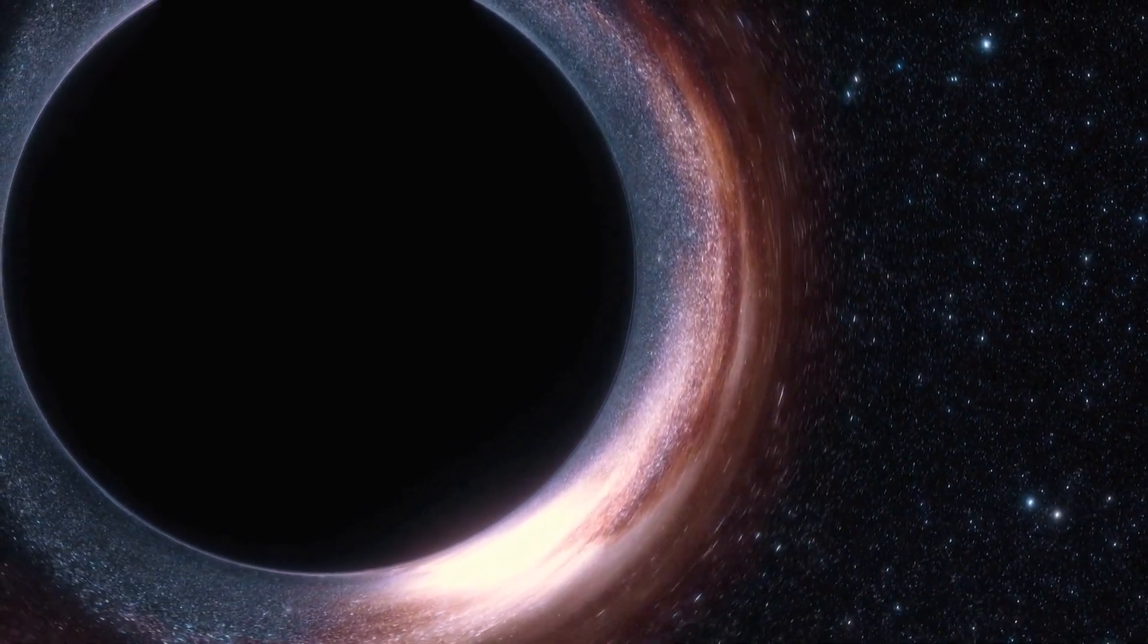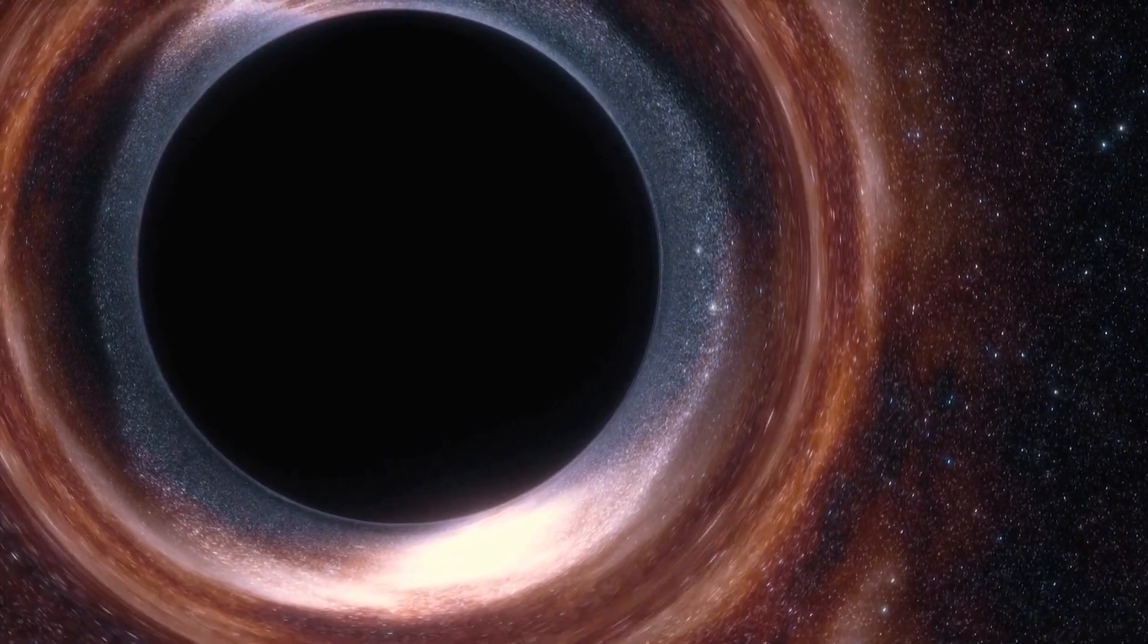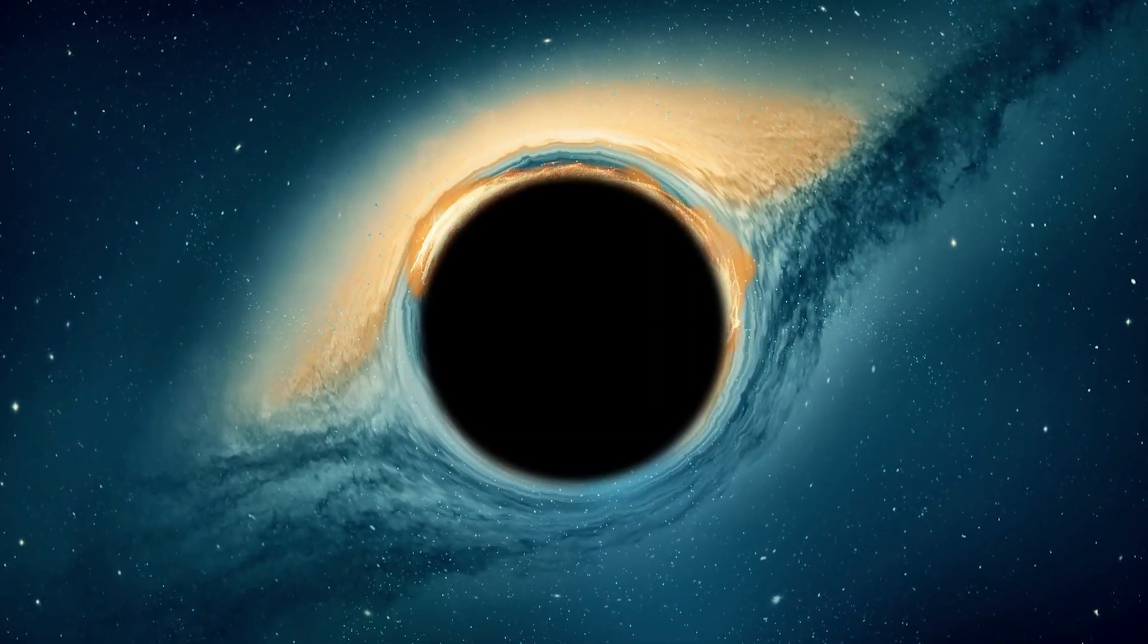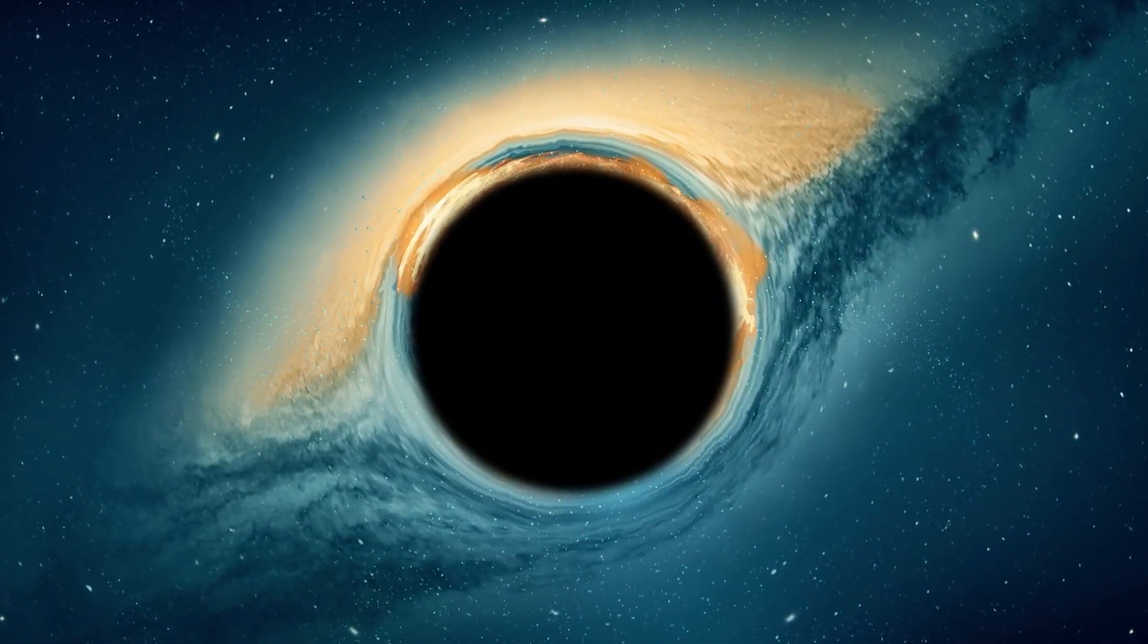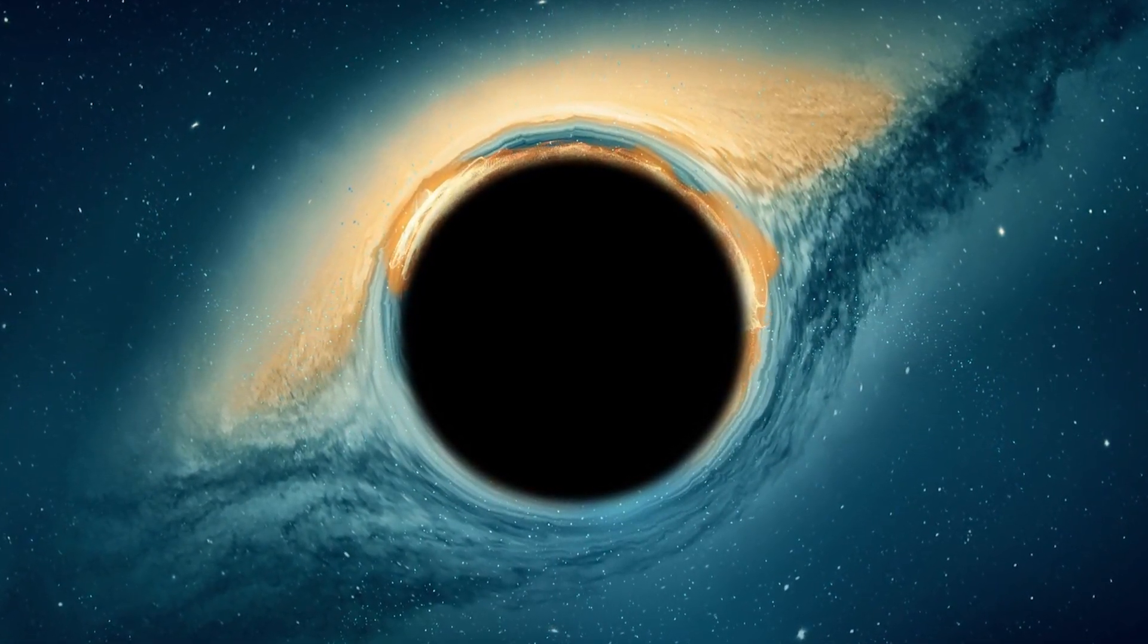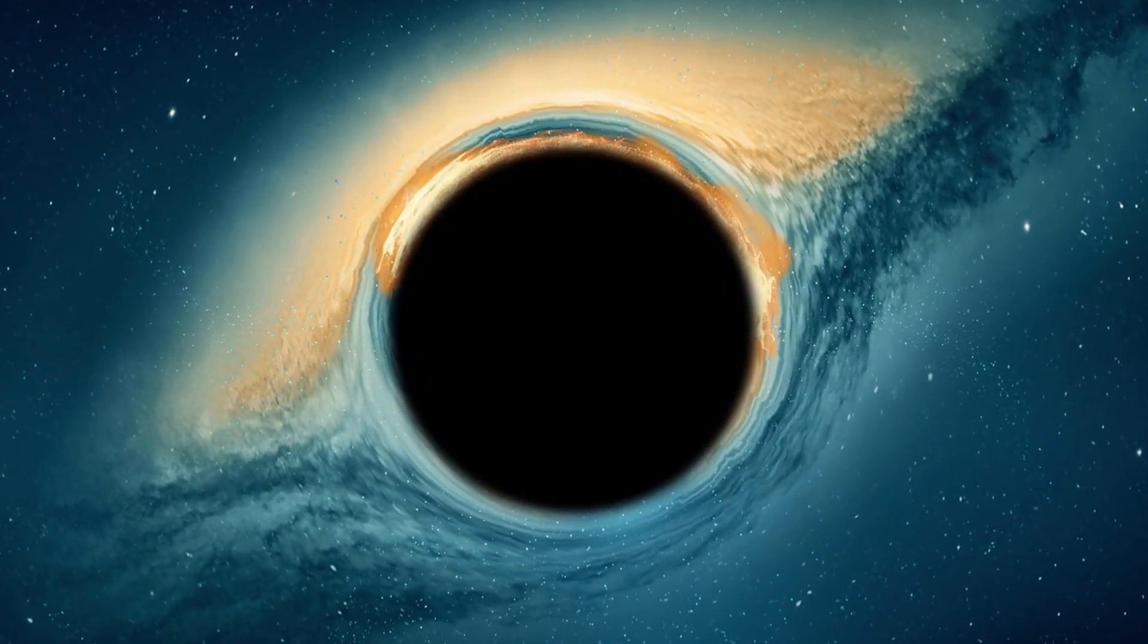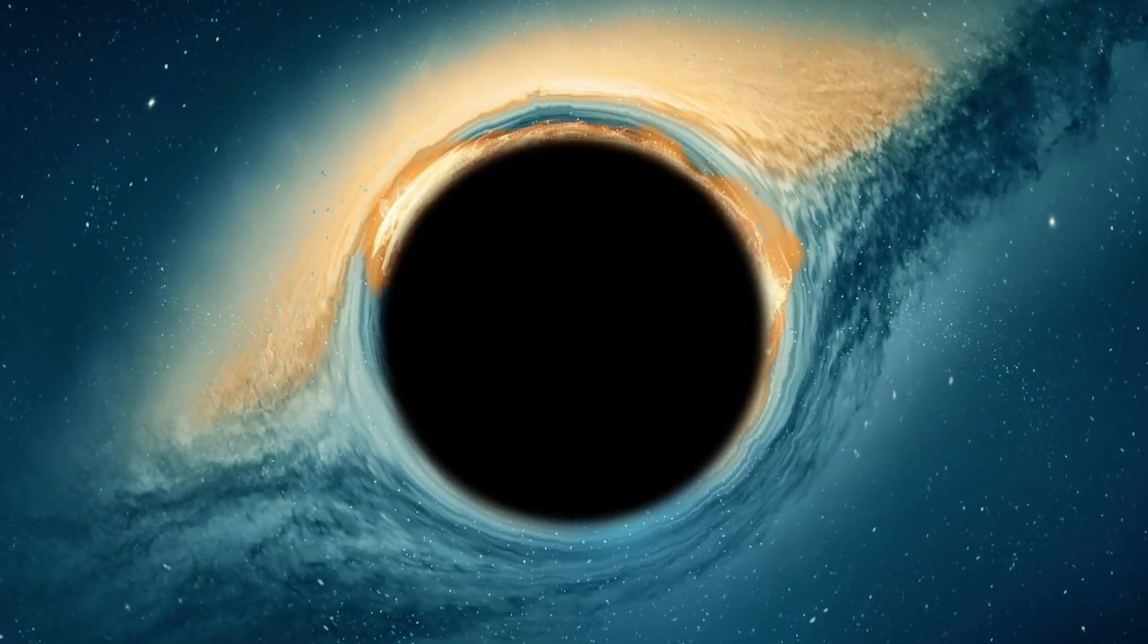As we well know, black holes possess extremely powerful gravitational force that even light cannot escape. However, in the vicinity of a black hole, one often finds a spinning disk of material, such as gas or dust, concentrated by its immense gravity. This material heats up as it spirals towards the black hole, emitting X-rays and other types of radiation, creating a luminous ring known as a corona.